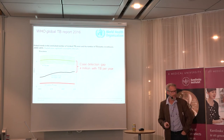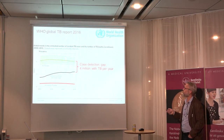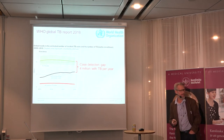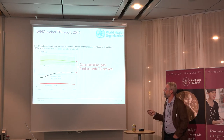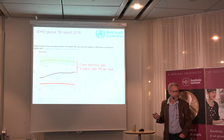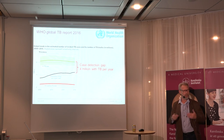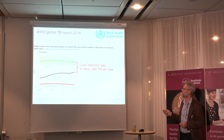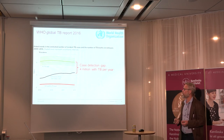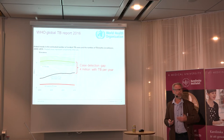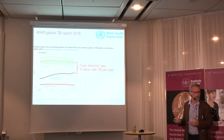This graph shows the trend of incidence — the number of new TB cases globally. In green is the estimated number of cases, with the shaded area representing the confidence interval since this is based on estimates, while the other line shows notified cases. The best estimate tells us first that incidence is going down, but very slowly — disappointingly slowly. It also tells us there's a big gap: an estimated 4 million people every year do not get access to good quality TB care. That's a missed opportunity to stop transmission by curing people.